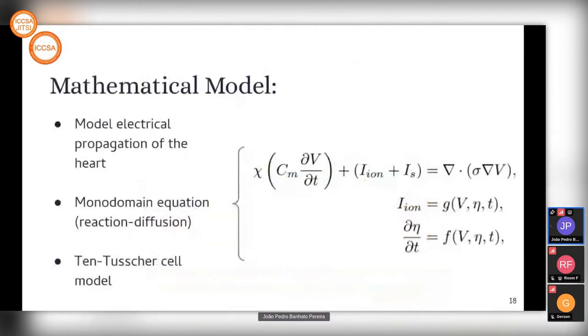Our mathematical model aimed to model the electrical propagation of the heart. To do that, we use the monodomain equation, which characterizes the propagation of action potential in cardiac tissue via a reaction-diffusion partial differential equation. In the first equation, the left part represents the reaction and the right part the diffusion. It combines the effects of ionic currents and diffusion of the potential.